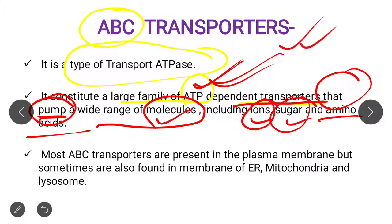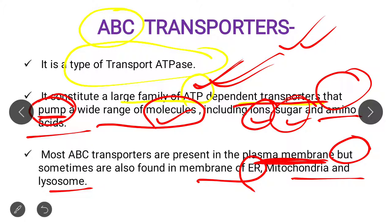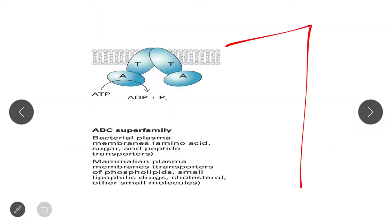Another question is: where is this ABC transporter present? ABC transporters are mainly present on the plasma membrane. However, they are sometimes also found in the membranes of the ER, mitochondria, and lysosomes. The main point is that majorly they are present on the plasma membrane.